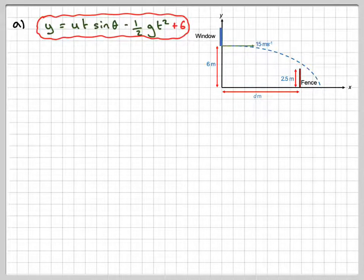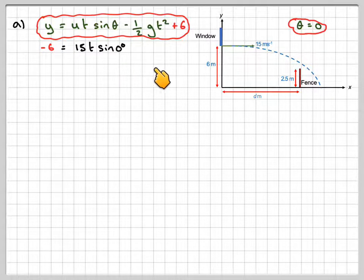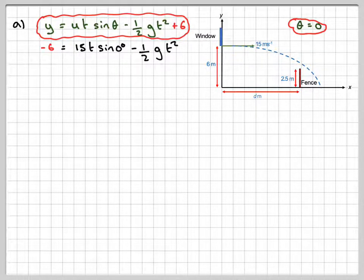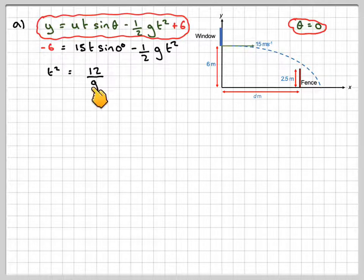Which means if we want to know where this point is then minus 6 has to be equal to 15 sine of 0 because the angle here is 0 minus 1.5 g t squared. Now, sine of 0 is 0 so that bit disappears and therefore we're going to get that t squared is 12.